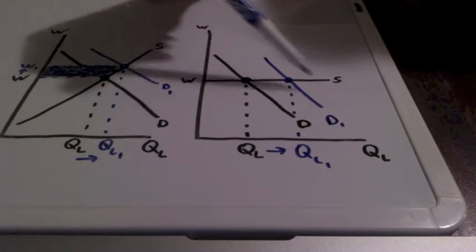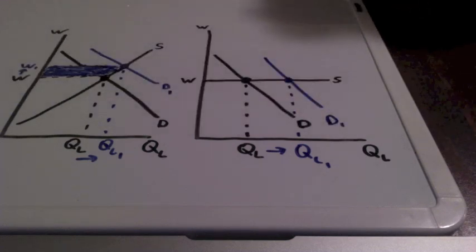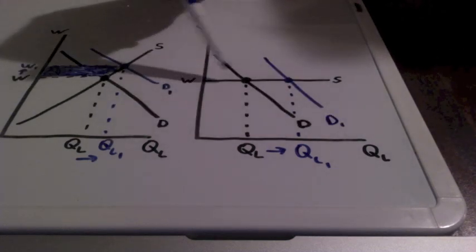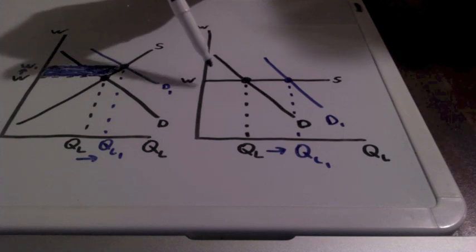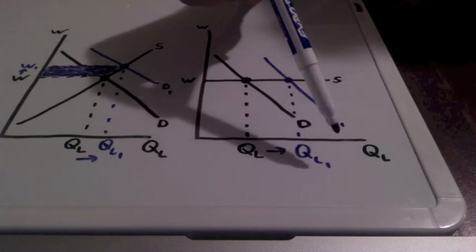As you can see, if a firm demanded more of this particular type of labor, the wage is going to stay fixed, but our quantity of labor is going to increase from QL to Q1.